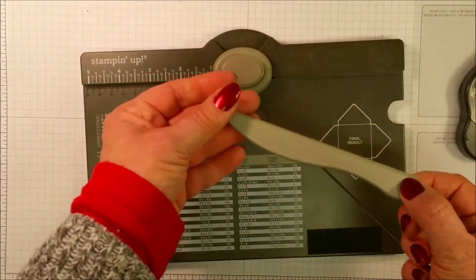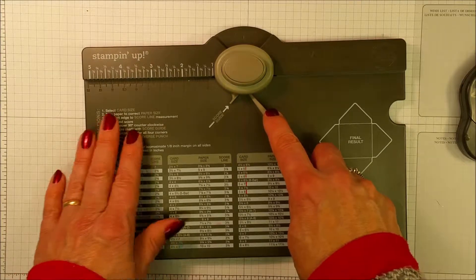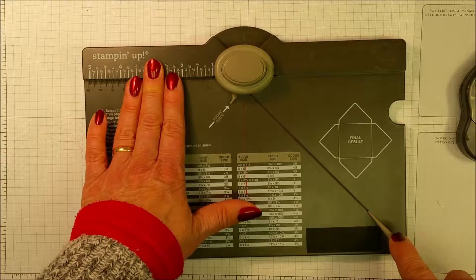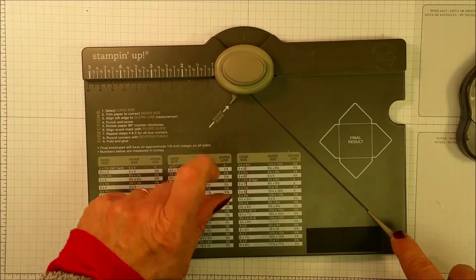It even comes with its own scoring tool, which you're just going to lay up against that flat edge once the paper's in the proper position, and drag it along that score line. So watch how quick and easy this is.